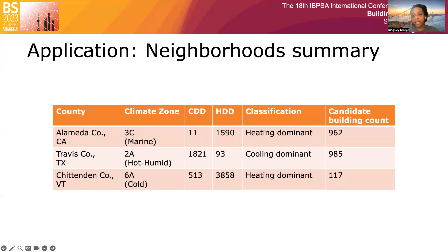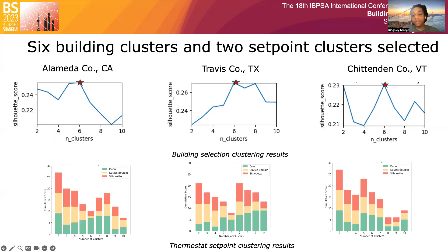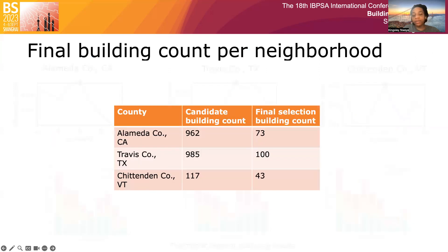Travis County is cooling-dominant, while the other two counties are heating-dominant. For the heating-dominant counties, we restrict our analysis to the January to March period of 2018, whilst the cooling-dominant county is analyzed for June to August in the same year. There are a total of 962, 985, and 117 buildings meeting our pre-selection criteria of detached single-family buildings built between the 1940s to 2010s. We find that each county can be split into six representative clusters, with two representative set-point profiles in each location. We finally select 73 buildings in Alameda County, 400 buildings in Travis County, and 43 buildings in Chittenden County to generate CityLearn data for our control analysis, and randomly assign set-point schedules from the set-point clusters to the buildings.